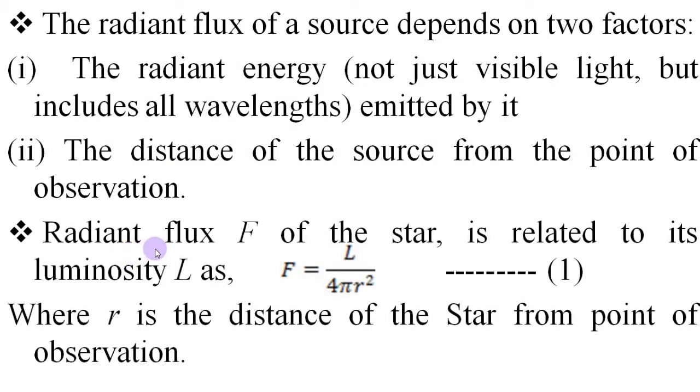Now, we can relate the radiant flux and luminosity by equation one like this. F is equal to L by 4πr² where F is radiant flux and L is luminosity. Now, how this relation can be reached?